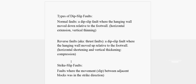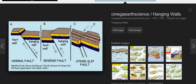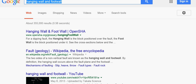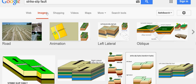Those are the types of dip-slip faults. Now we have a type of strike-slip fault — basically a fault where the movement or slip between adjacent blocks was in the strike direction. Let's go ahead and look that up on Google to see some pictures of strike-slip faults.